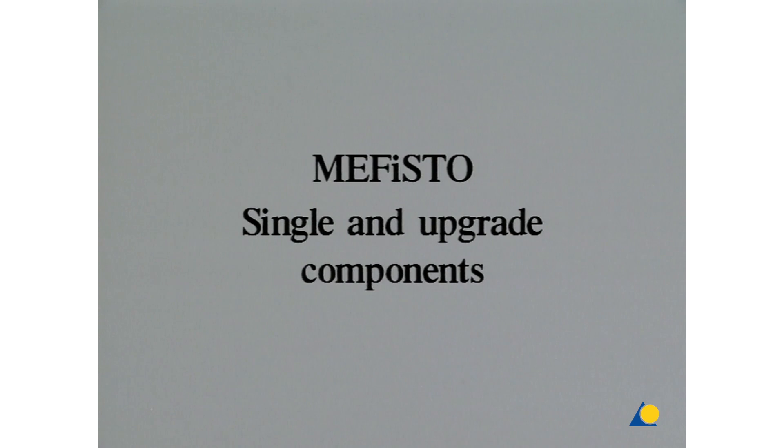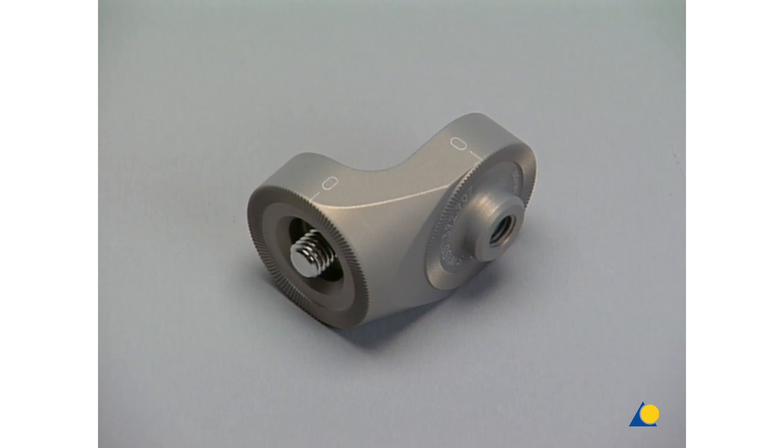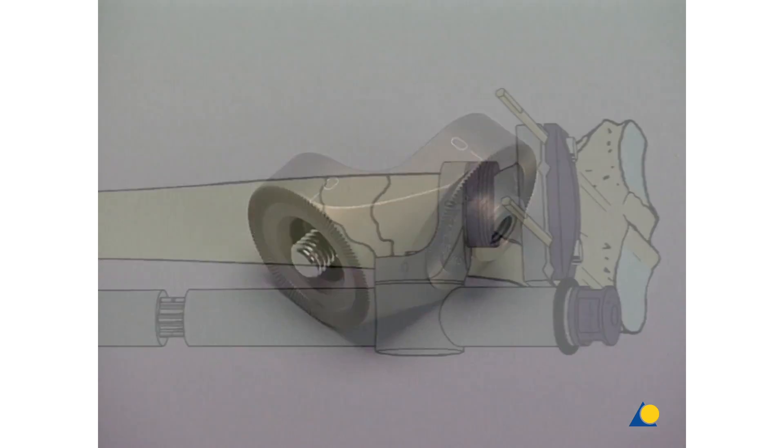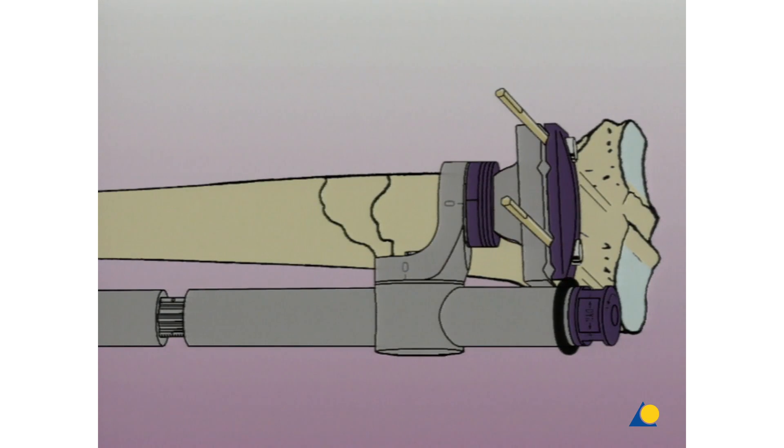The Mephisto system includes many other single and upgrade components, some of which are shown here. With this angled piece for T-assembly, Mephisto can be used for metaphyseal tibia fractures.